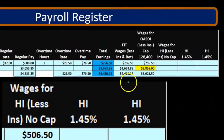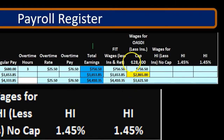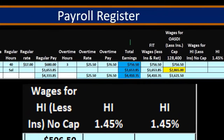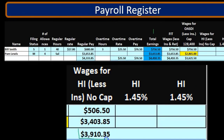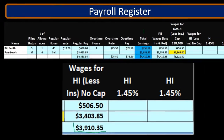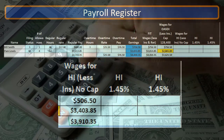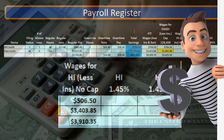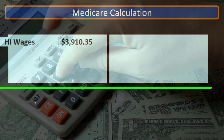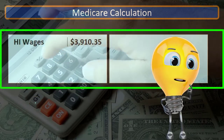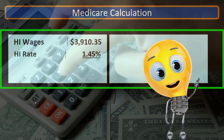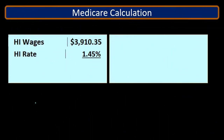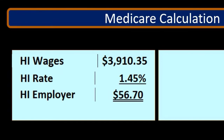That's the major difference that could be there between total earnings and the HI or Medicare earnings. Note that that's different from the OASDI, which has a cap — a major component of the OASDI or Social Security. Now we'll do the calculation. We're going to start with the total and calculate the total for the employer and employee portions of HI or Medicare. We'll take the total HI of $3,910.35 times the rate, 1.45% or 0.0145, and we get $56.70.